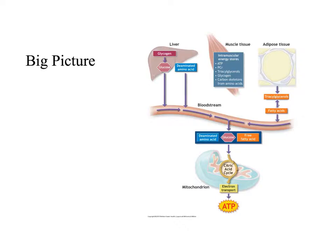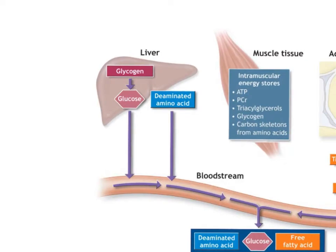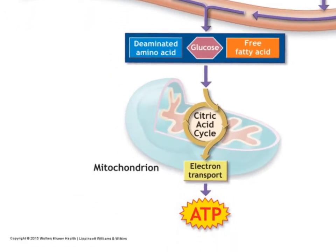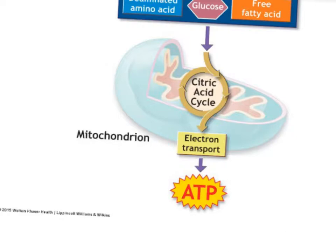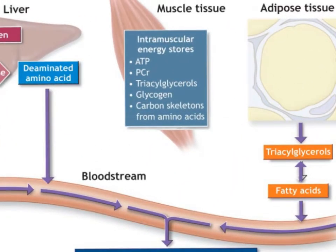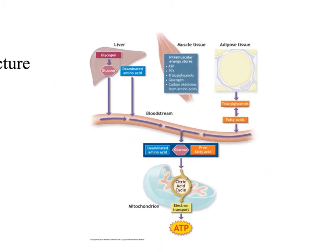Here's a big-picture overview to revisit after we cover glycolysis and the citric acid cycle. Starting in the liver, glucose is stored and can be shuttled into the bloodstream where it's taken up into cells and converted to pyruvate for the citric acid cycle. Adipose tissue releases free fatty acids into the bloodstream which are taken up into skeletal muscle. Inside skeletal muscle itself we have intramuscular stores of ATP, phosphocreatine, fats (triacylglycerols), and glycogen.